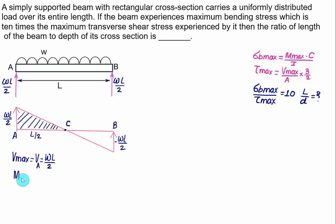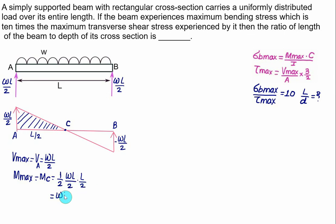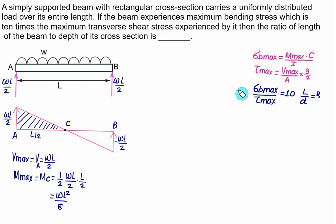The maximum bending moment M_C equals the area of the triangle: (1/2) × (WL/2) × (L/2) = WL²/8. Maximum shear force is WL/2 and maximum bending moment is WL²/8. Now we calculate the maximum bending stress and maximum shear stress for the rectangular section.